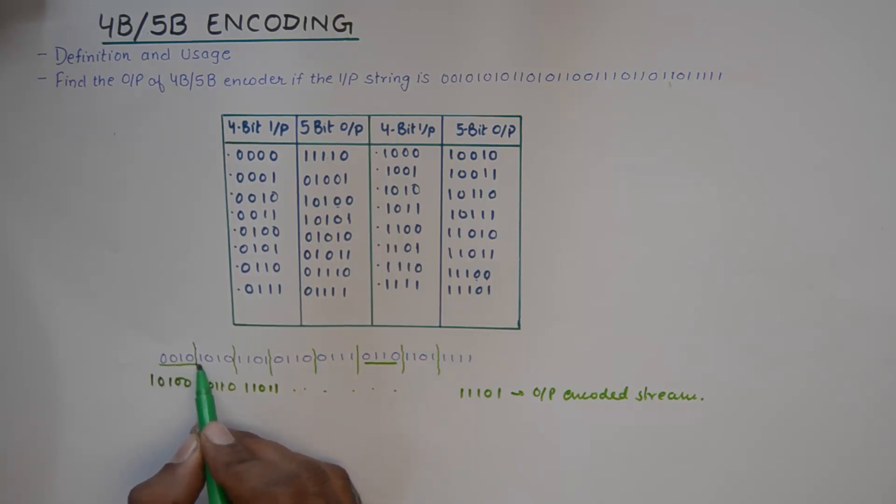For example, these two codes when they are combined at the output, you will never get a string of more than three 0's in a row because we have seen that the last two bits can be 00 and the first bit can be 0 at the most.